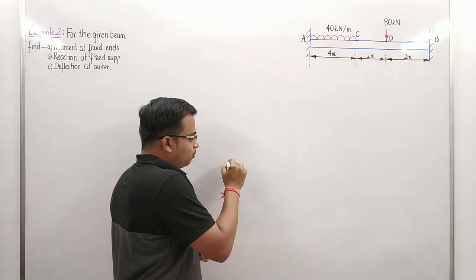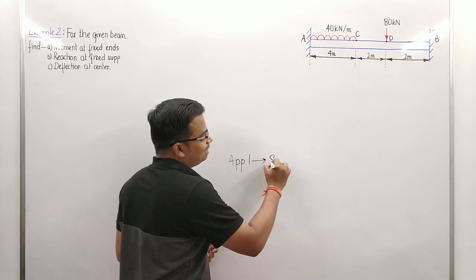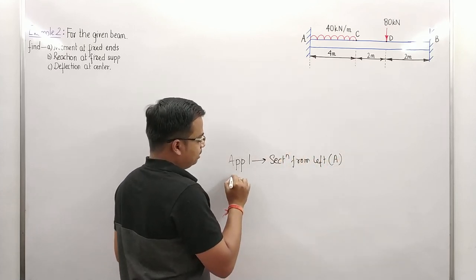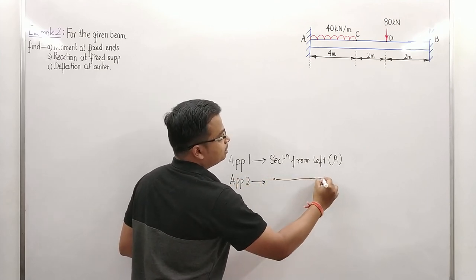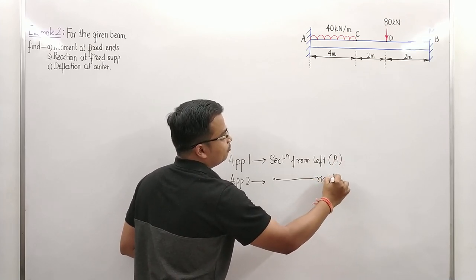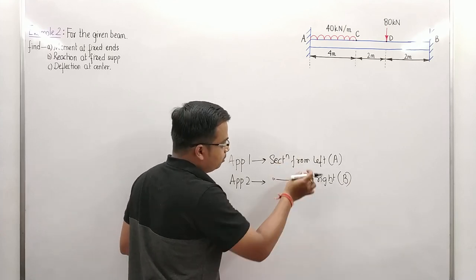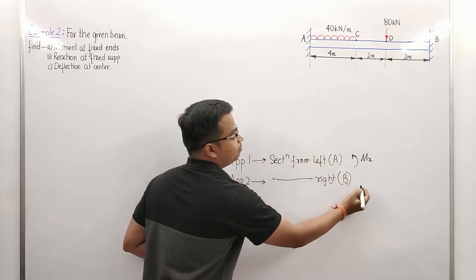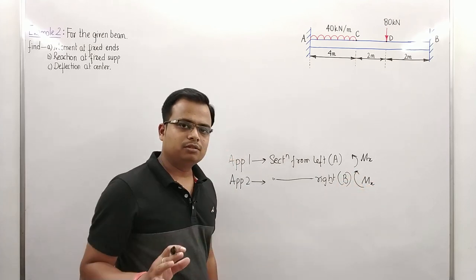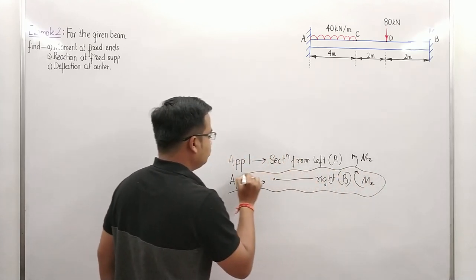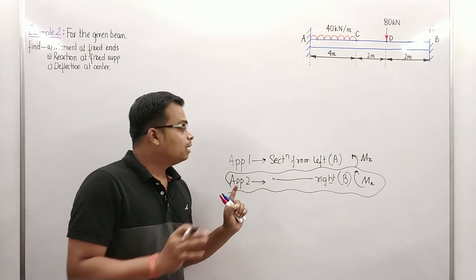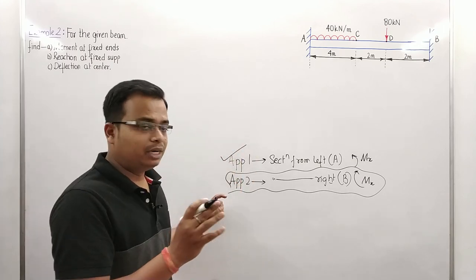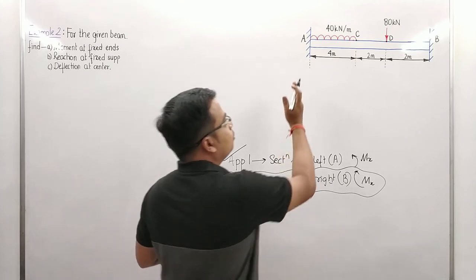There are two approaches. In approach one, we take the section from the left end A. In approach two, we take the section from the right end B. When you take the section from the left, the bending moment MX is taken as anti-clockwise. When you take it from the right, MX is taken as clockwise. The solution using approach two will be shown as a snapshot at the end of the video for about 10 seconds.